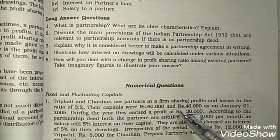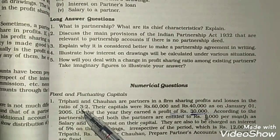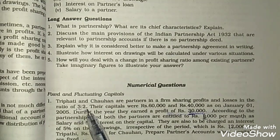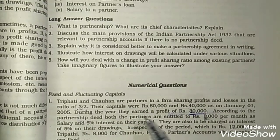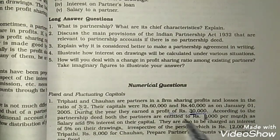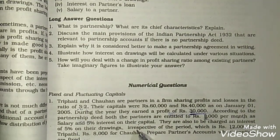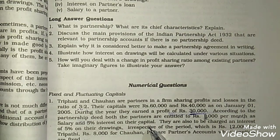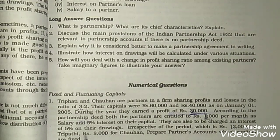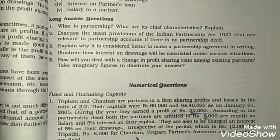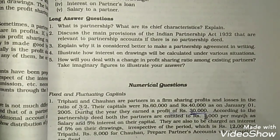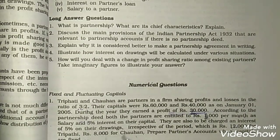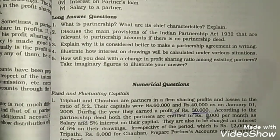So Tripathi and Chauhan are partners in a firm sharing profits and losses in the ratio of 3:2. Their capitals were Rs. 60,000 and Rs. 40,000 as on January 1, 2005. During the year, they earned a profit of Rs. 30,000. According to the partnership deed, both partners are entitled to Rs. 1,000 per month as salary and 5% interest on their capital. They are also to be charged interest of 5% on their drawings — Rs. 12,000 for Tripathi and Rs. 8,000 for Chauhan. We have to prepare the partners account when capitals are fixed.